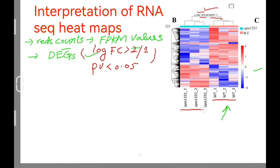There were two treatments: one is wild type and the other is a mutant called APA 1331. This heat map was created under two conditions. Each condition should have three repeats — here this is one, two, and three. Similarly, the second condition, wild type, also has one, two, and three repeats.